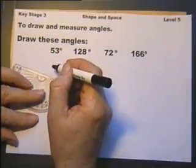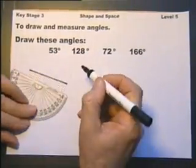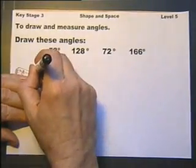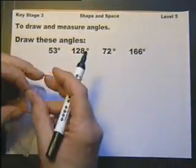So to draw any angle, first off you need a line. It doesn't matter if the line is not horizontal at all. It doesn't have to be.